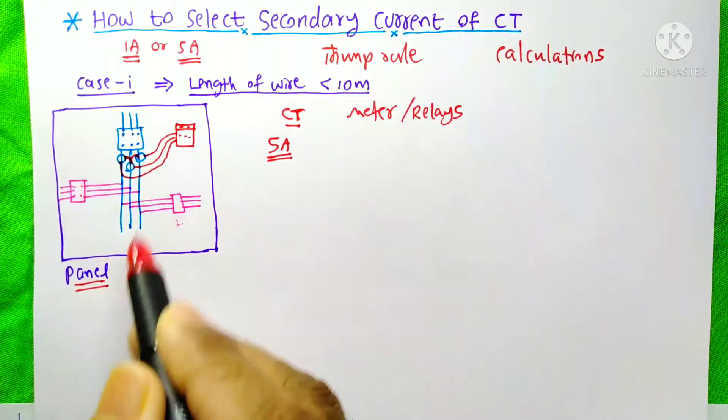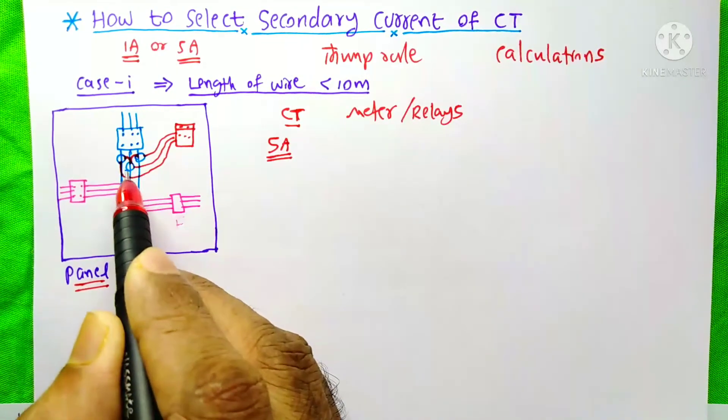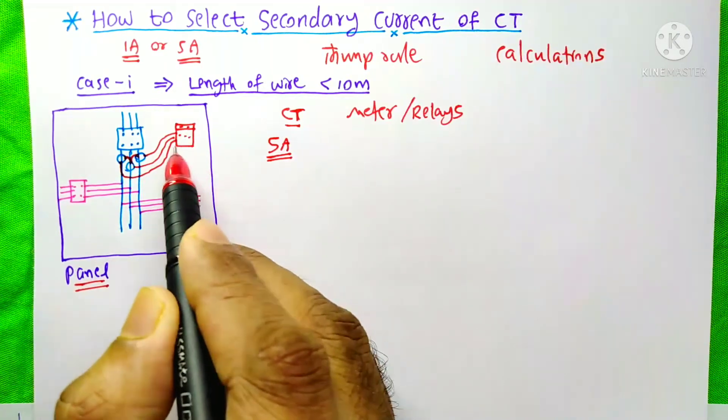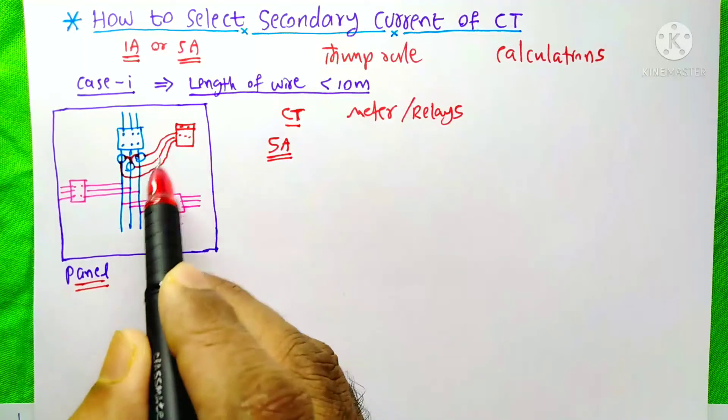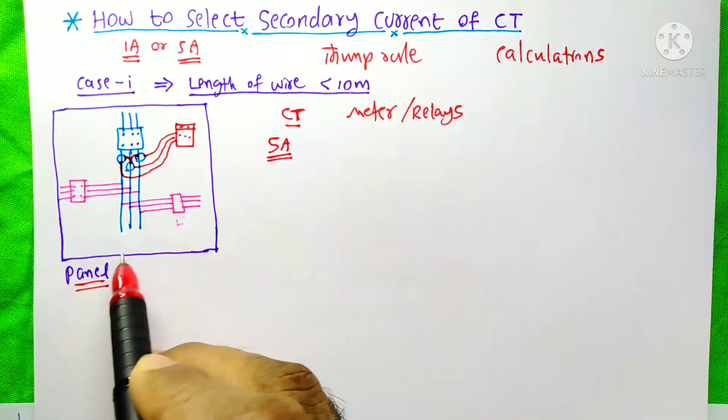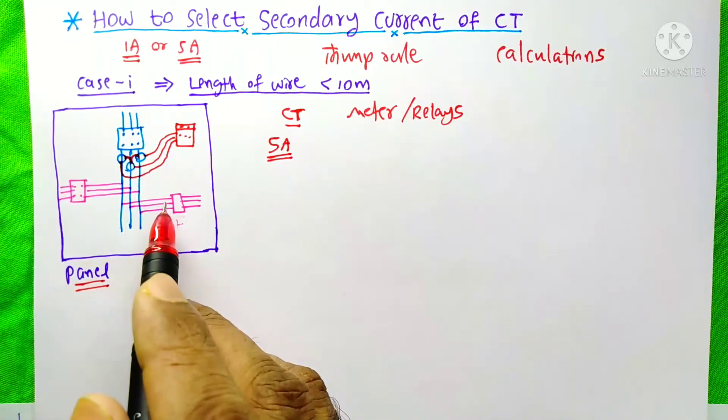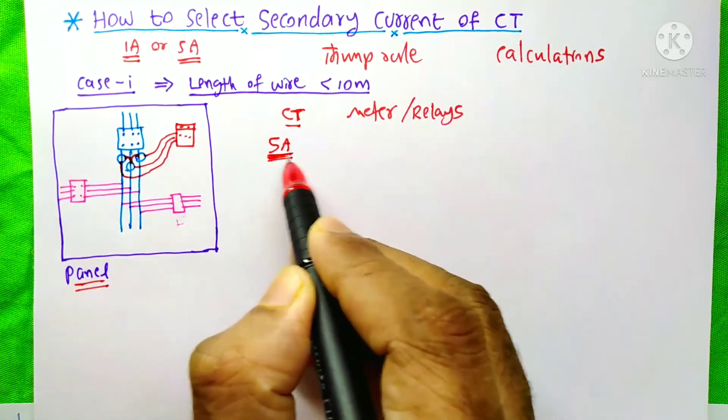In this case, we have an electrical panel and these are the CTs. Their secondary wires are connected to the meter or relay. In this case, the length of the wire is less than 10 meters because both are on the same panel. So we will use a CT with 5A secondary current.